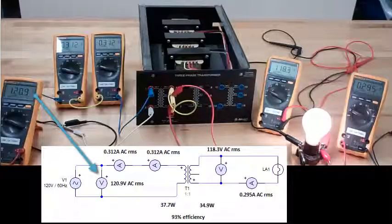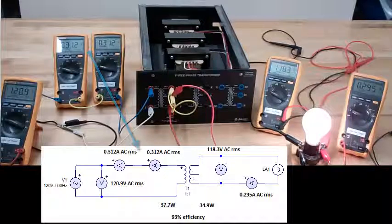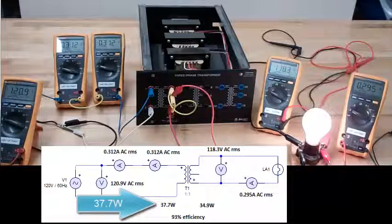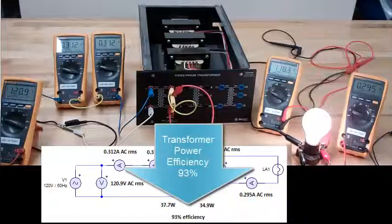Input voltage is 120.9 volts. Input current is 0.312 amps. Output voltage is 118.3 volts. Output current is 0.295 amps. That's a 37.7 watt input power and a 34.9 watt output power for a transformer power efficiency of 93%.